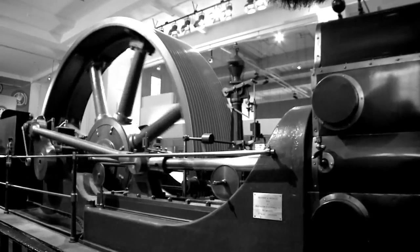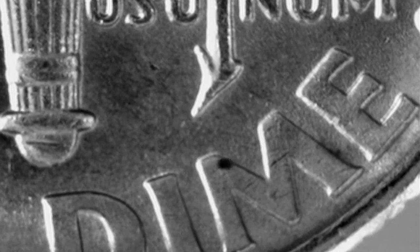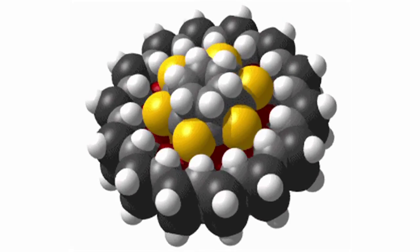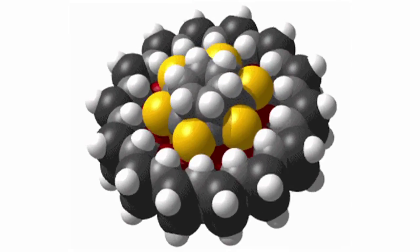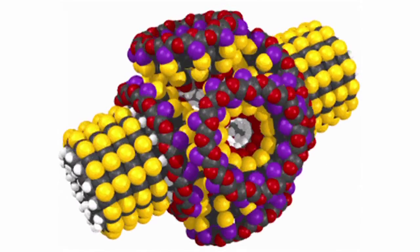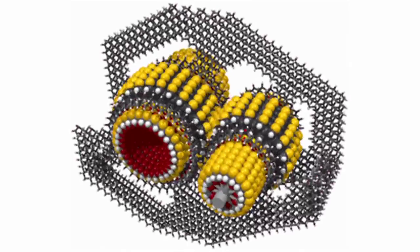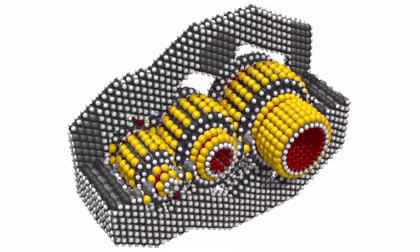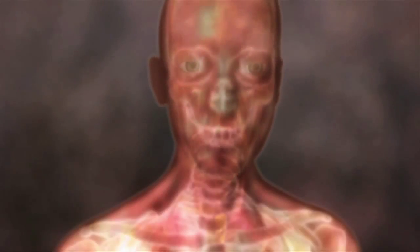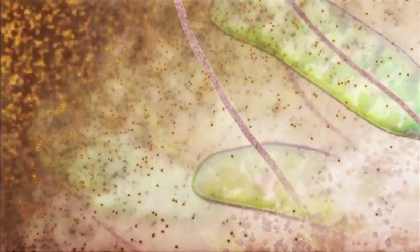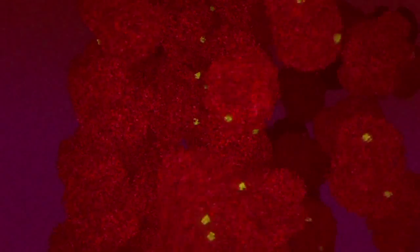Throughout history, we've been making smaller and smaller machines. Now scientists are looking at ways to create machines at the smallest scale possible, using atoms as their building blocks. Some researchers believe that we could construct molecular machines that could make anything we wanted — and if this happens, it will revolutionize our lives. We know that molecular machines can work, because they're in every cell of our bodies, working away right now, turning food into energy, fixing damage, keeping you warm and making new cells. You are already a masterpiece of molecular nanotechnology.